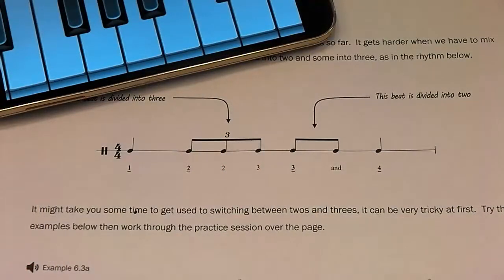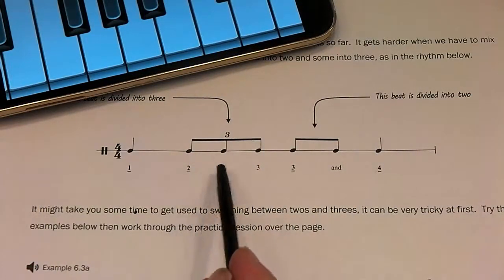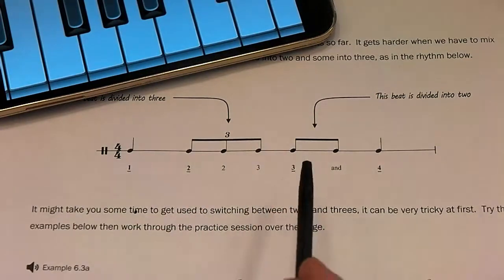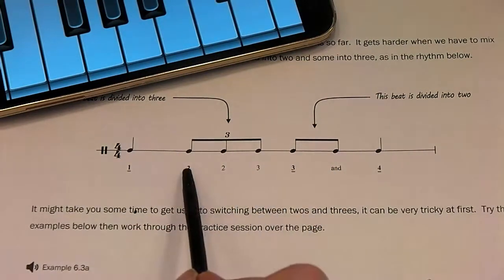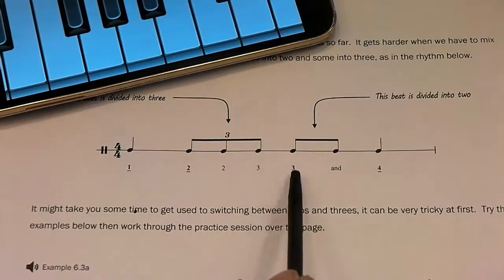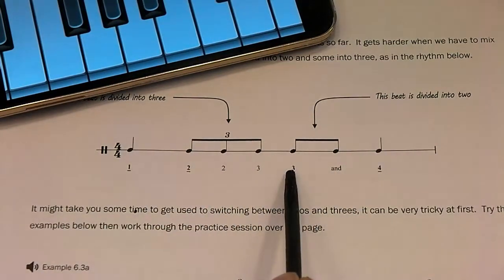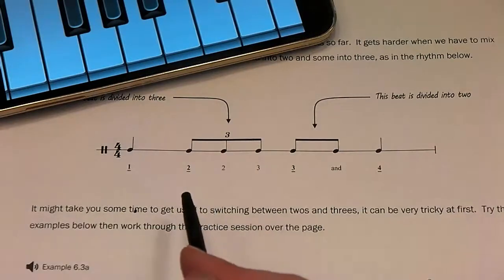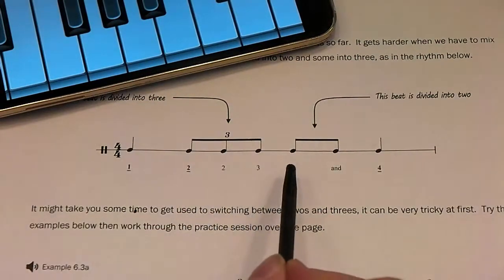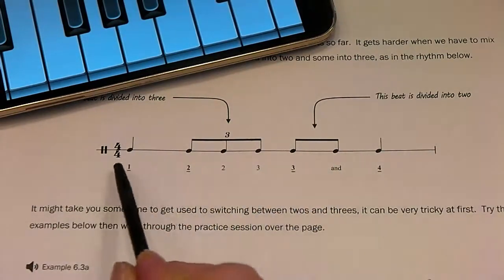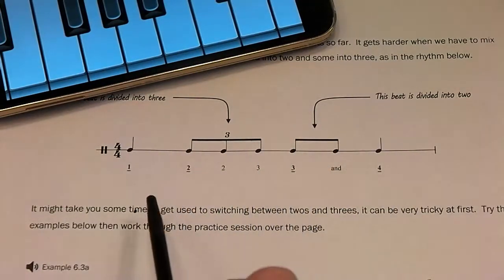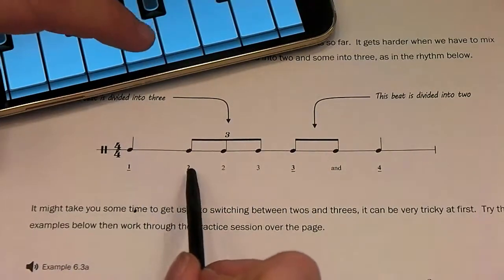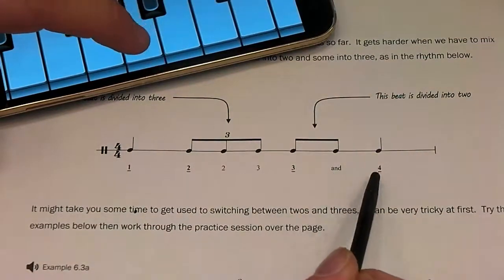This example on page 134 contains both a quaver triplet on beat 2 and a regular pair of quavers on beat 3, meaning this beat is divided down into 3 and this one is divided into 2. We have to be very comfortable with the feel of both the beat divided into 3 and the beat divided into 2 to be able to play these kinds of rhythms where the two are mixed up. 1, 2, 3, 4.